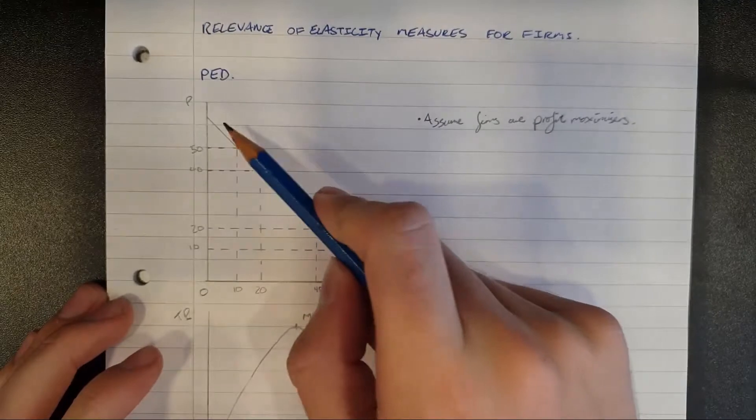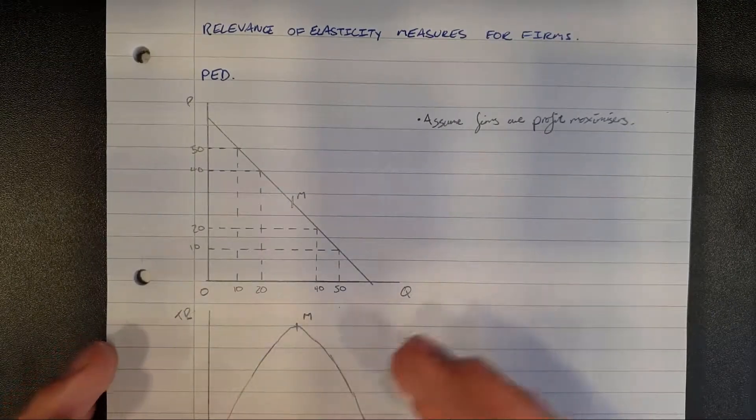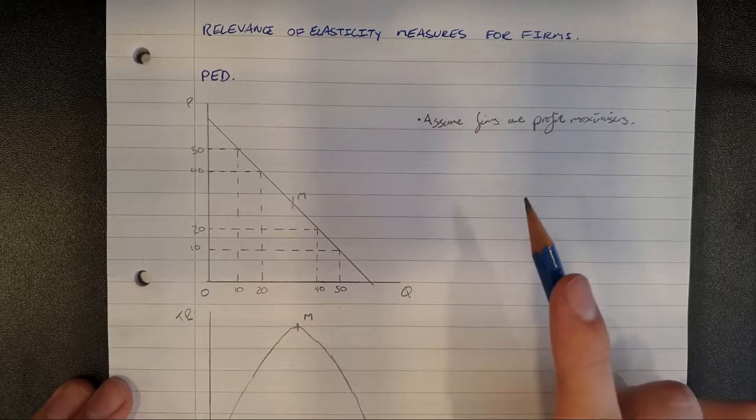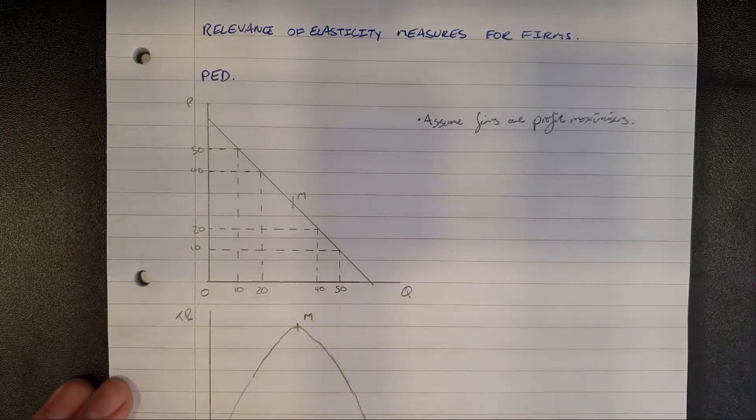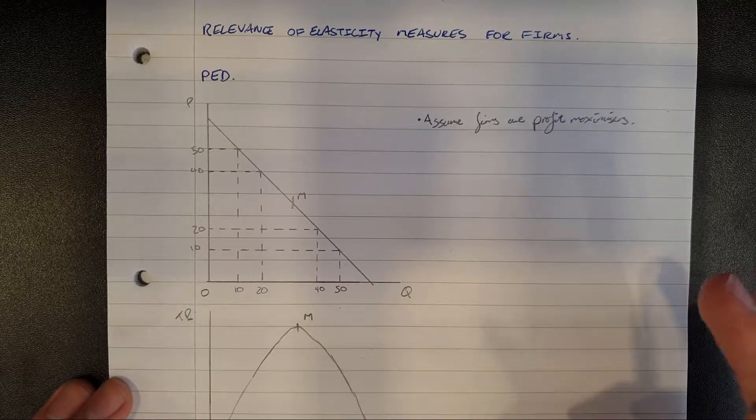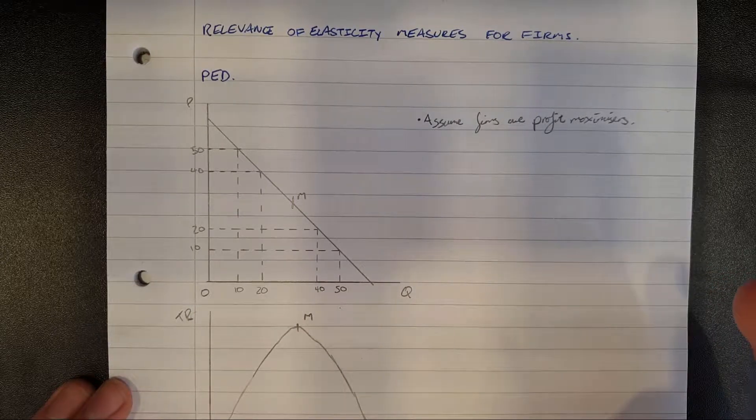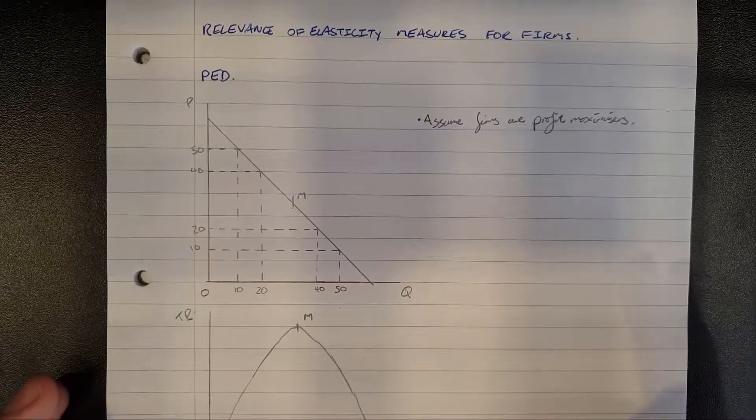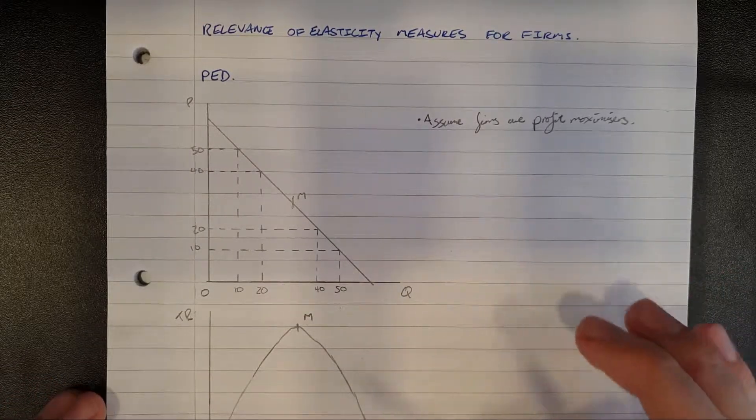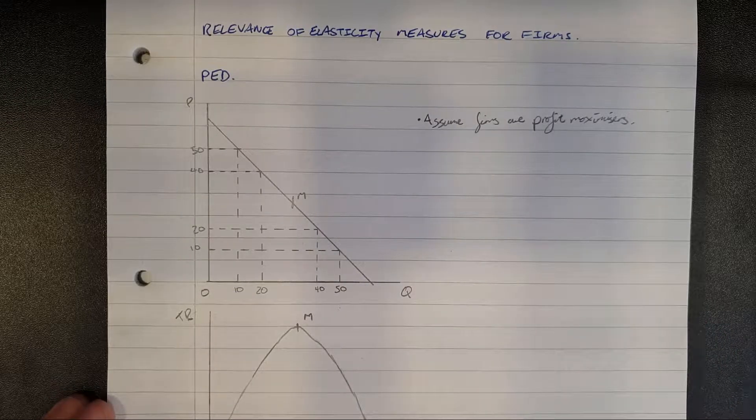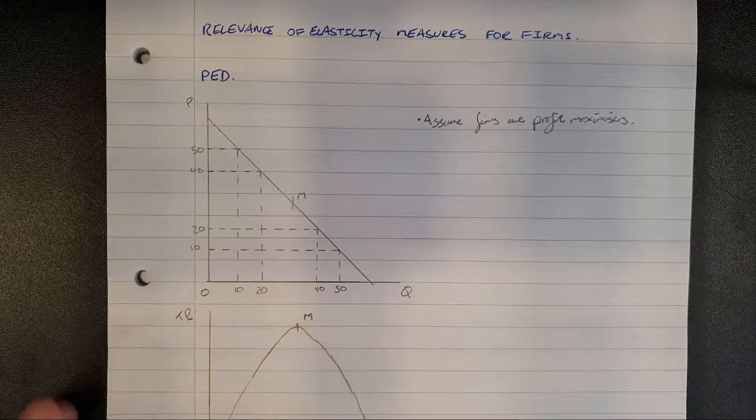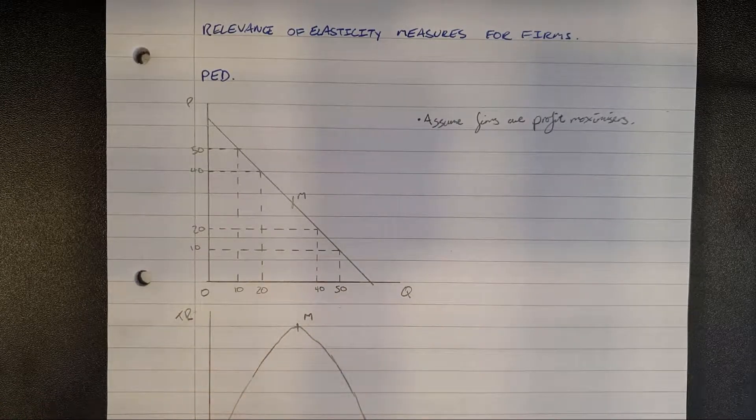We're going to start with PED and one prerequisite is that in our economic theory we must assume firms are profit maximizers. Obviously in the real world NGOs exist, sustainable ventures exist which may have other goals such as equality, justice, or environmental goals, but here we simply assume that firms are profit maximizers. This means they want to make as much in revenue as possible. So how can they use elasticity to do this?